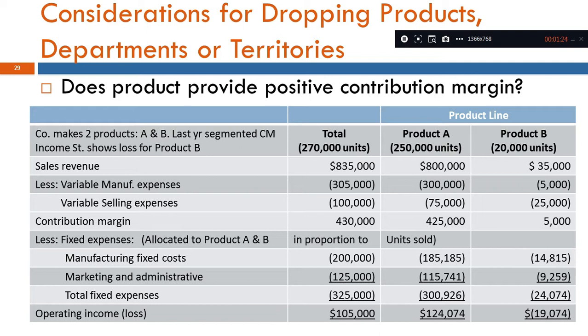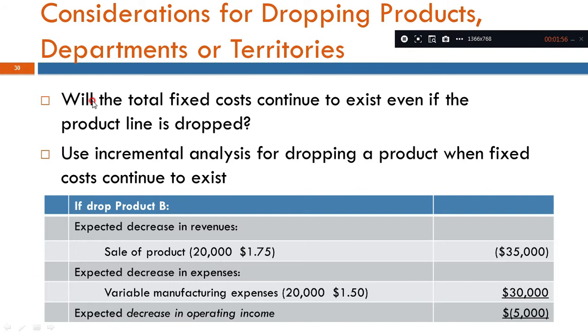First we have to ask ourselves a question: does the product provide a positive contribution margin before deciding whether to keep or drop the product, department, or territory? You have to first get an answer to the question: does the product, department, or territory provide a positive contribution margin? If yes, then you ask yourself the next question: will the total fixed cost continue to exist even if the product line is dropped?